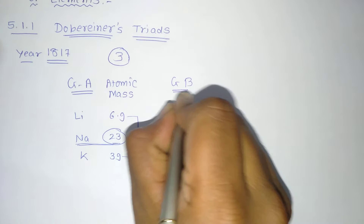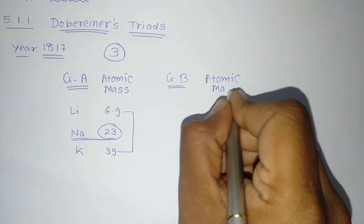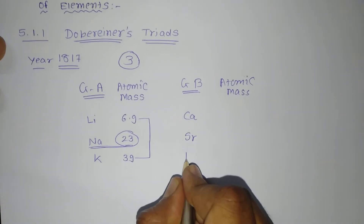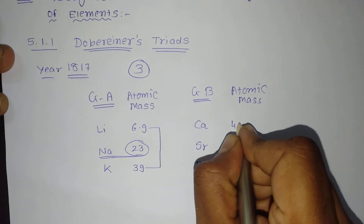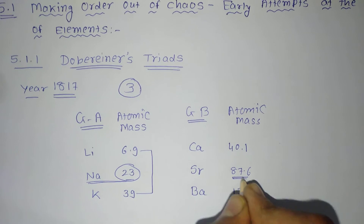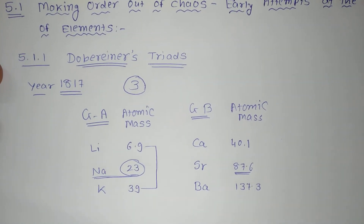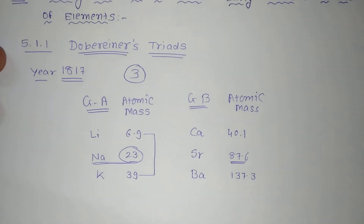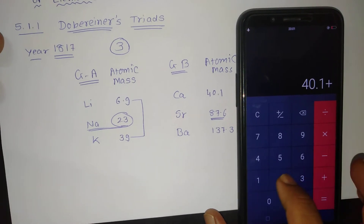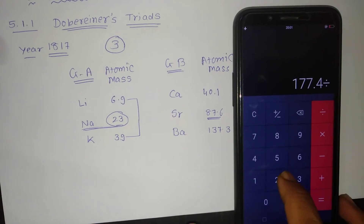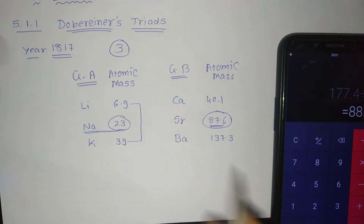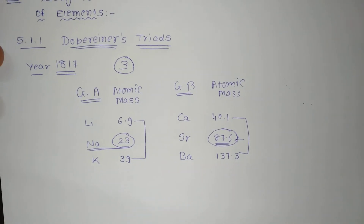For Group B, the triad is calcium, strontium, and barium, with atomic masses 40.1, 87.6, and 137.3 respectively. The average of the two outer elements is (40.1 + 137.3) ÷ 2 = 88.7, which is near about 87.6 — the atomic mass of strontium, the middle element. So the average of these two outer elements is roughly near about the middle element's atomic mass. For Group C, the triad is chlorine, bromine, and iodine with atomic masses 35.5, 79.9, and 126.9.